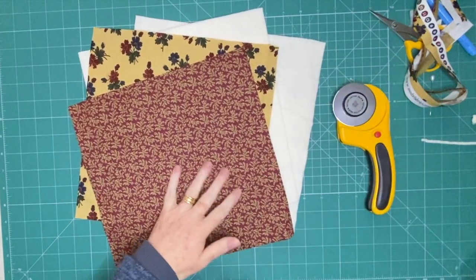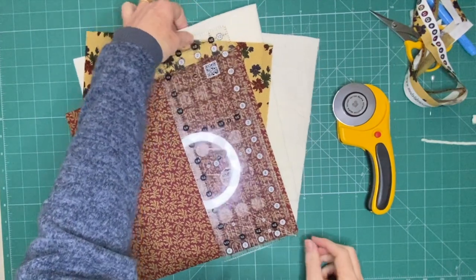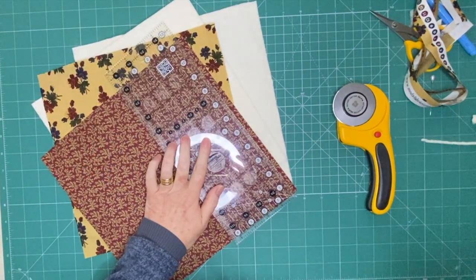For each bowl cozy you need to cut two pieces of fabric measuring 11 inches and a piece of batting for each fabric as well.